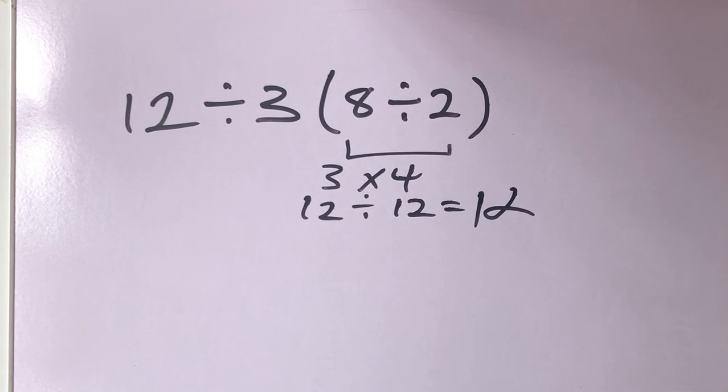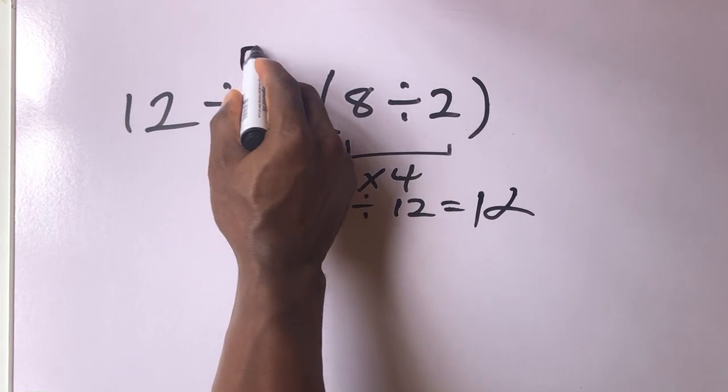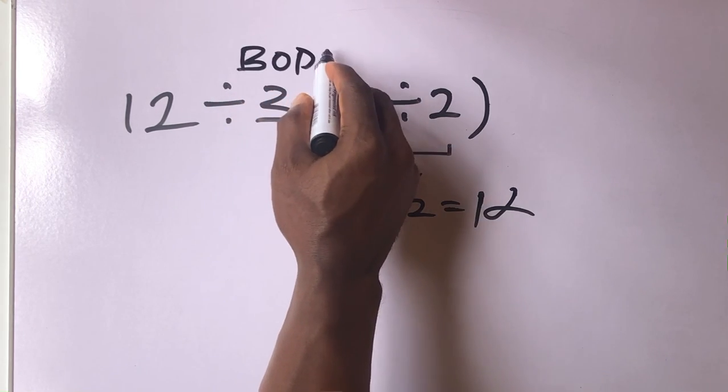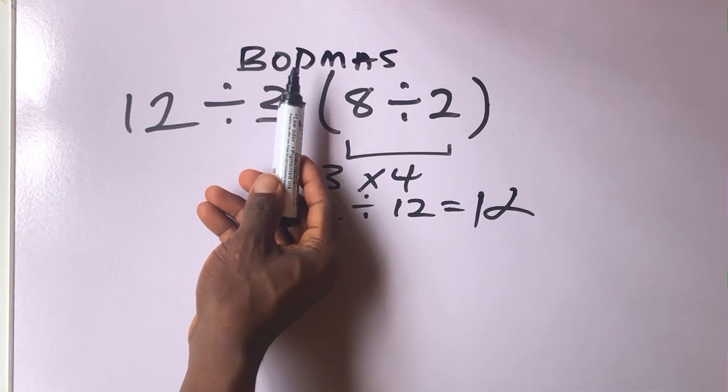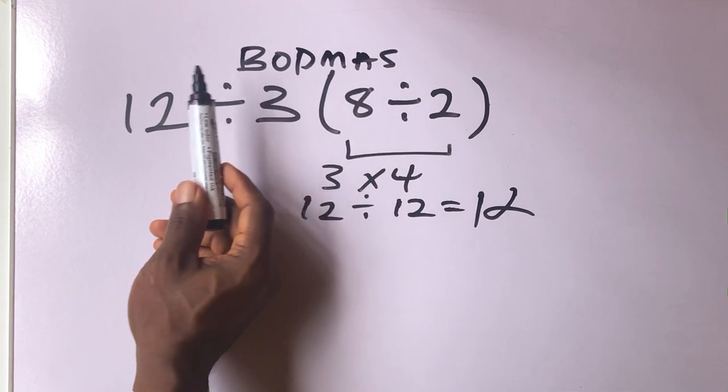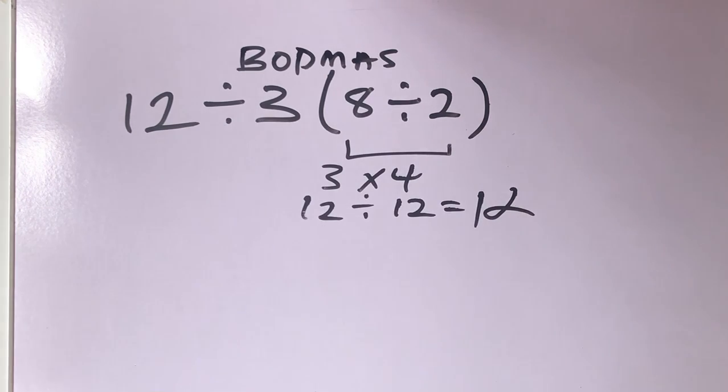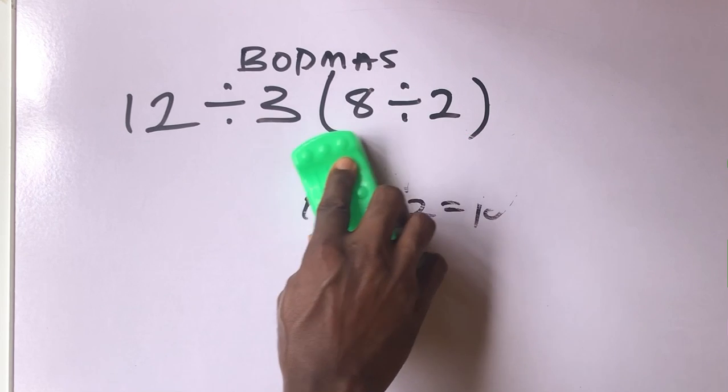According to order of operation, we have to first of all solve brackets before the division, multiplication, and addition and subtraction from left to right. So let's see the correct answer.